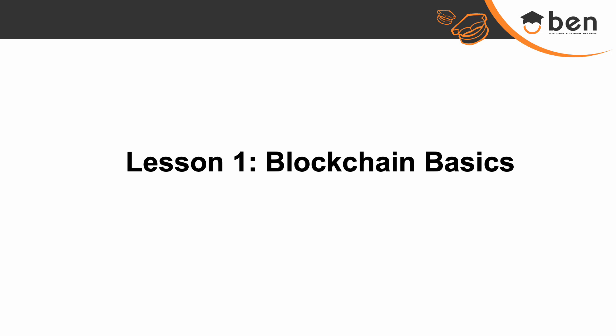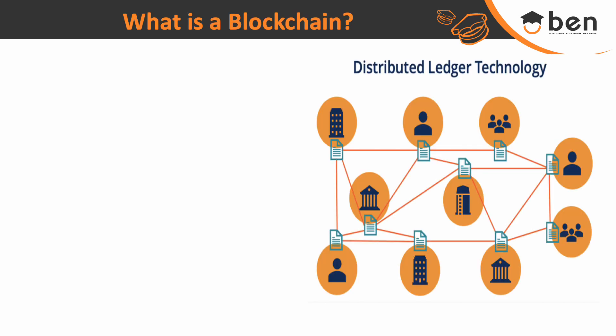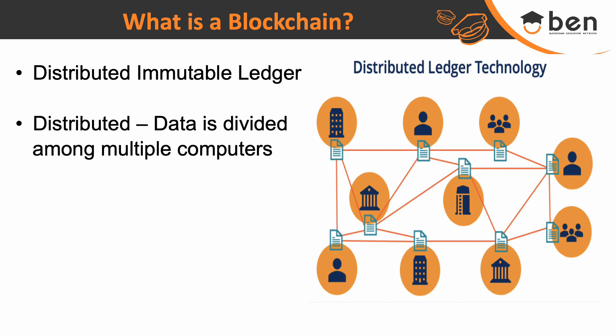So let's begin. What is a blockchain? Blockchain is a distributed immutable ledger. Let us have a look at each of these terms individually to understand the underlying technology behind blockchain.